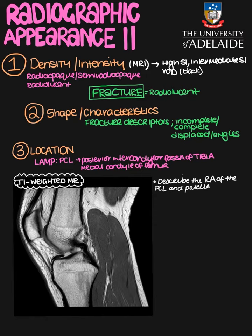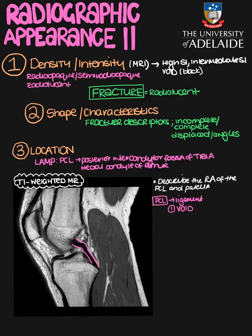Focusing on the posterior cruciate ligament — if we highlight where the PCL is located in the scan, these are going to be its boundaries. The cruciate ligaments, regardless of whether posterior or anterior, are ligaments, and we know that ligaments on both T1 and T2 weighted MRI are always going to be a void structure. So the first criteria: the intensity of the PCL is void.